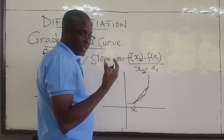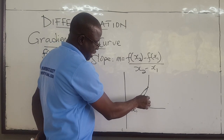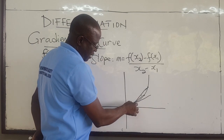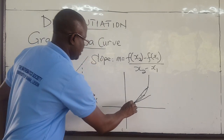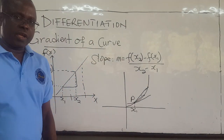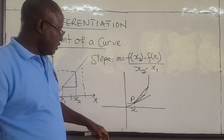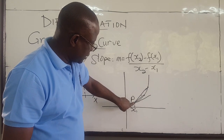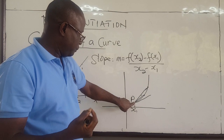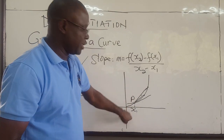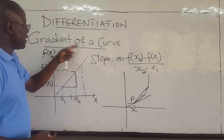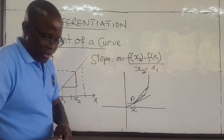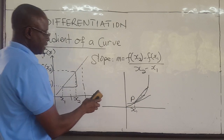The actual slope at this point will be the tangent — this line here that touches the curve at the point p. So the question is: how do you find the slope of the tangent to this curve at this point? That will give us the slope of the curve at the point x. That is what we mean by the gradient of the curve. So we are going to derive a formula for doing that.